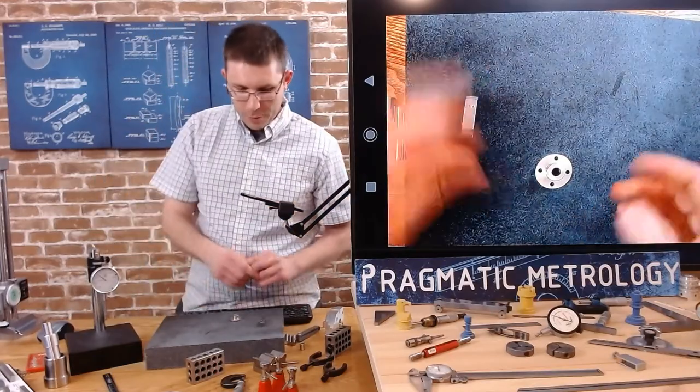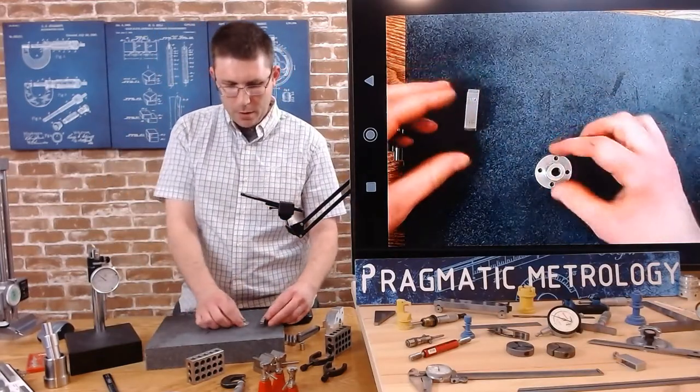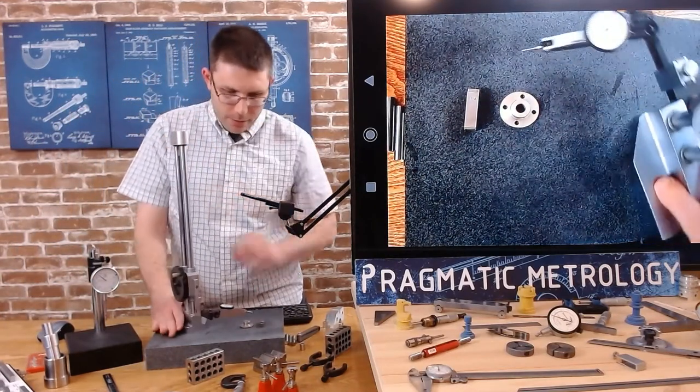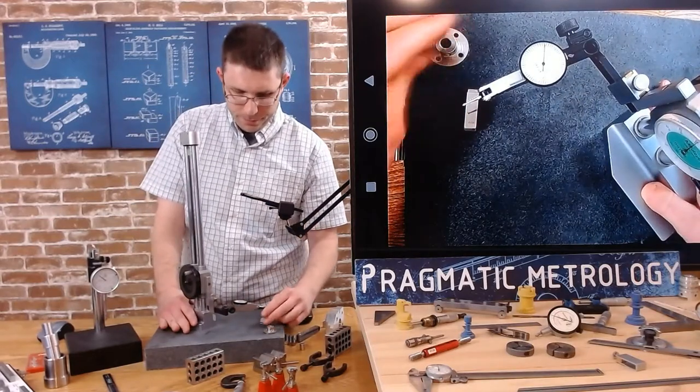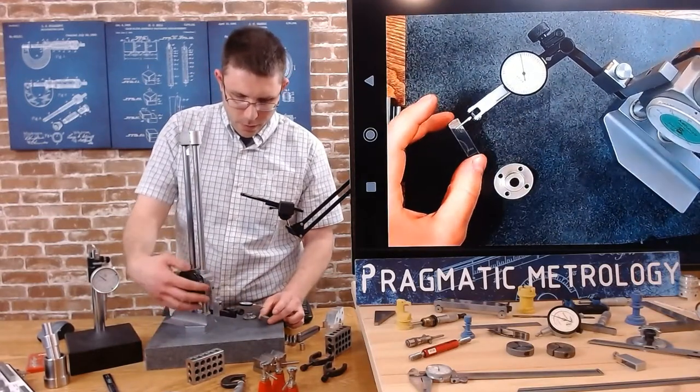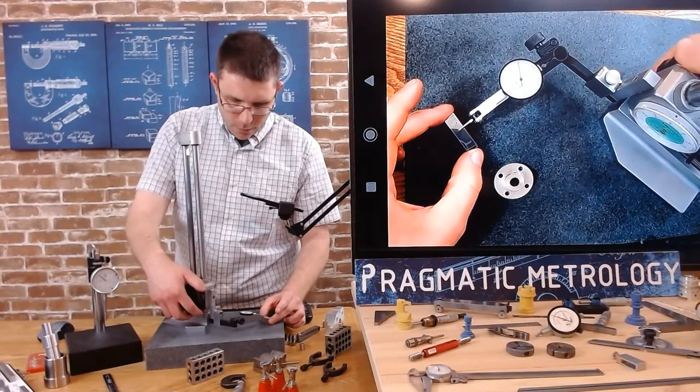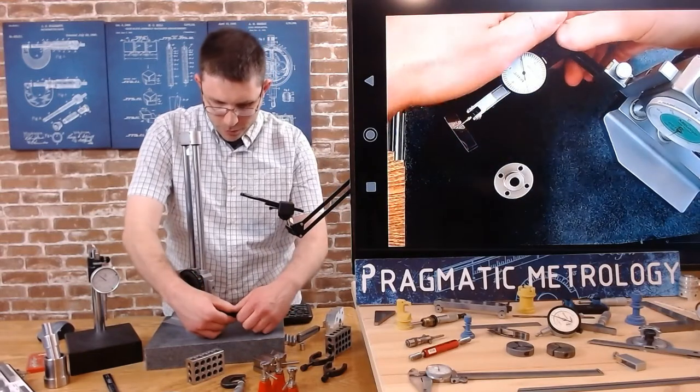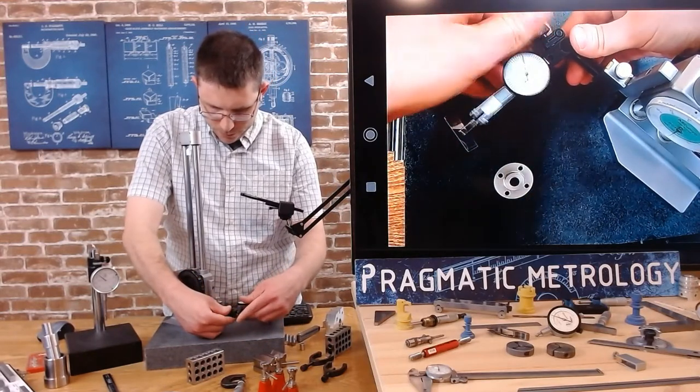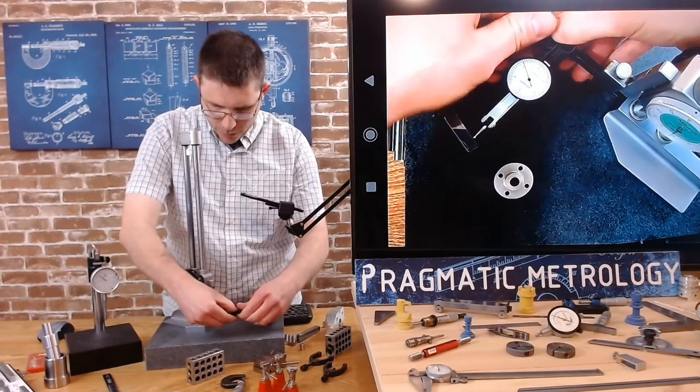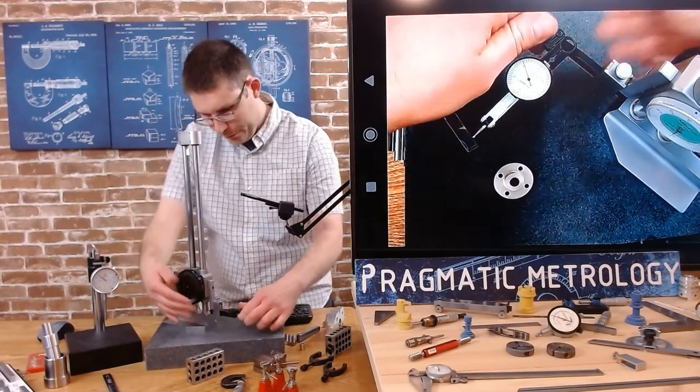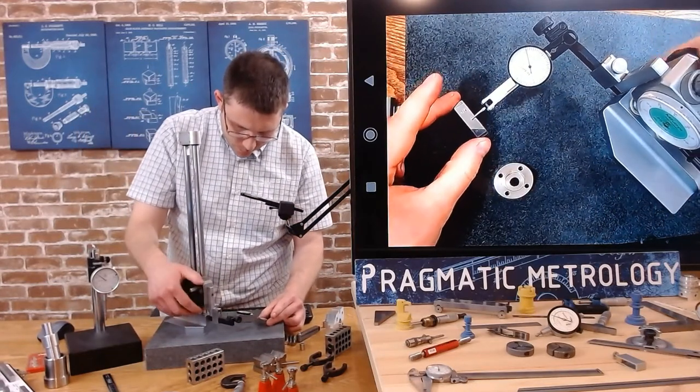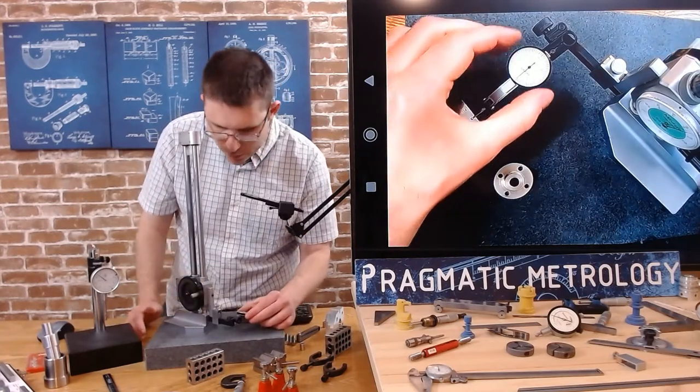And now we're going to set up transfer measurement. So what I'll do, I'm going to have zero. Of course we're a little bit too small. I ran out of travel. I'm going to set my indicator close to parallel and zero.